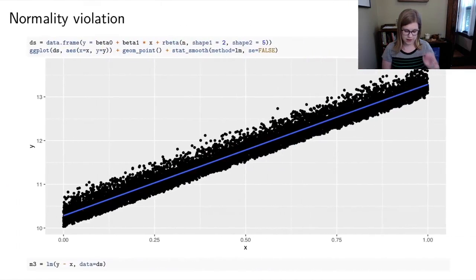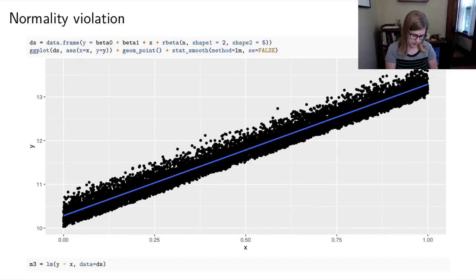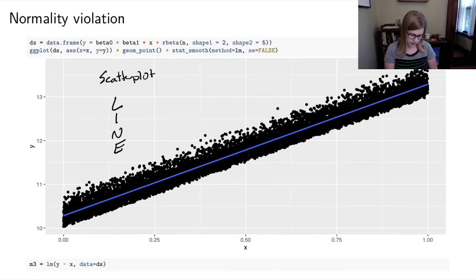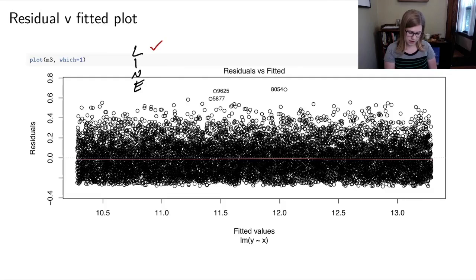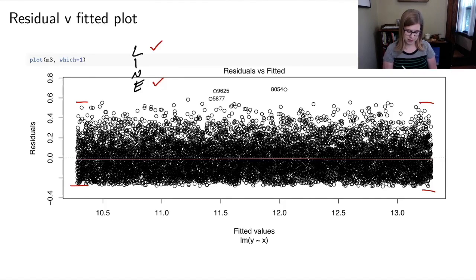I've generated data violating the normality condition. Looking at the scatter plot, something already looks a bit off. In the residual versus fitted plot, linearity looks fine — the red line is flat — and the equality of variance also looks good, with the band of residuals being uniform width. But something still looks a little weird on the residual plot.